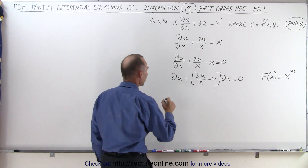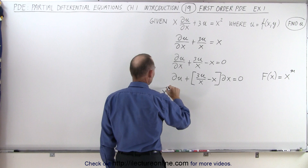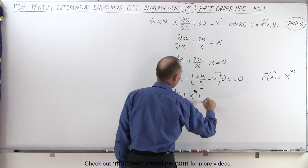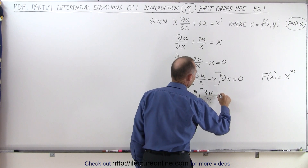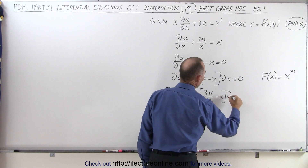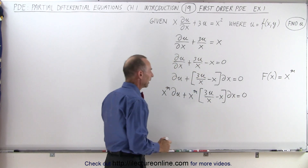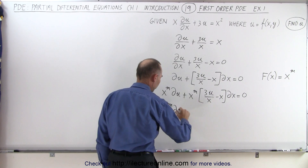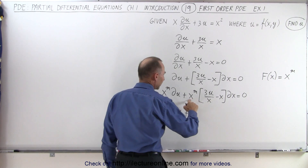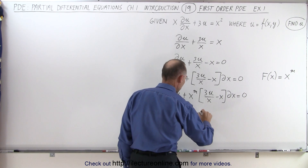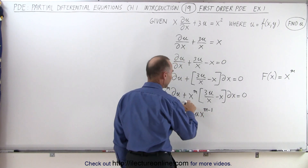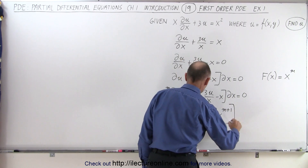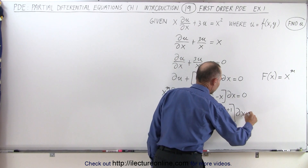So let's try that. We multiply both sides by x to the m power, so we get x to the m power times the partial of u, plus x to the m power times 3u divided by x, minus x times the partial of x, equal to zero. Multiplying through, we get x to the m times the partial of u, plus 3u·x to the m minus 1, minus x to the m plus 1, all times the partial of x, equal to zero.